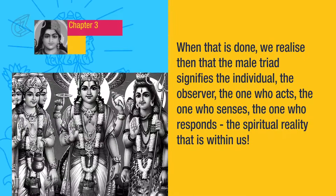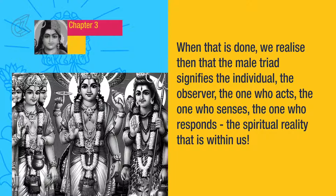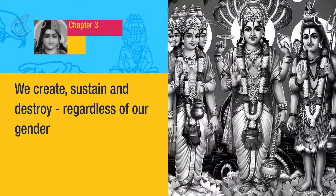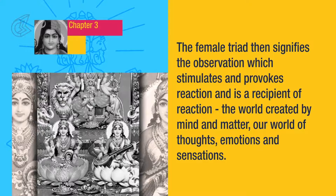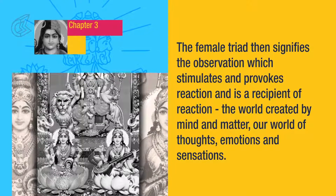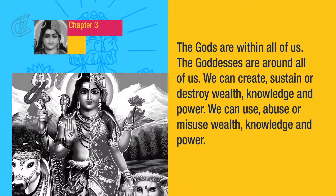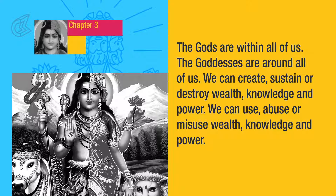When that is done, we realize that the male triad signifies the individual — the observer, the one who acts, the one who senses, the one who responds — the spiritual reality that is within us. We create, sustain, and destroy, regardless of whether we are men or women. The female triad then signifies the observation which stimulates and provokes reaction, and is a recipient of reaction — the world created by mind and matter, our world of thoughts, emotions, and sensations. The gods are within all of us; the goddesses are around all of us. We can create, sustain, or destroy wealth, knowledge, and power.